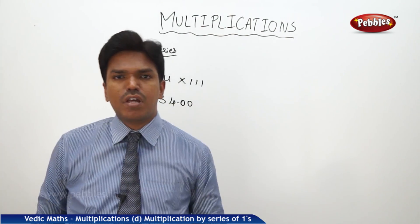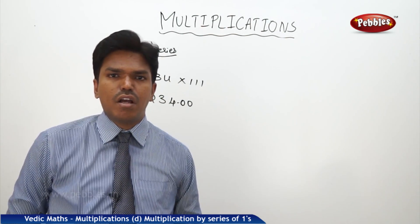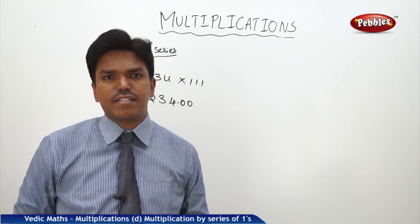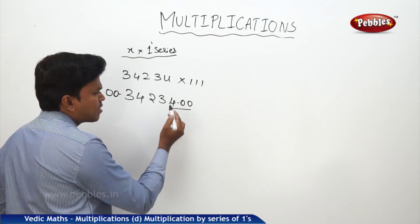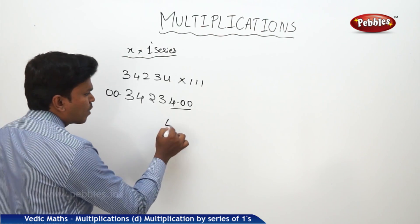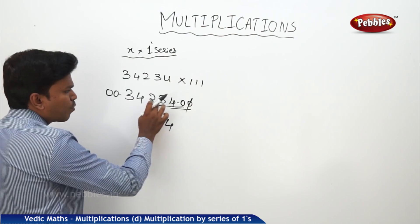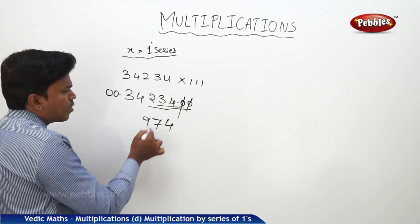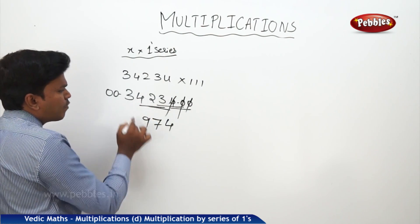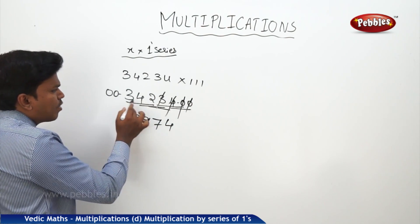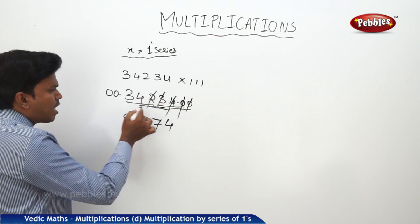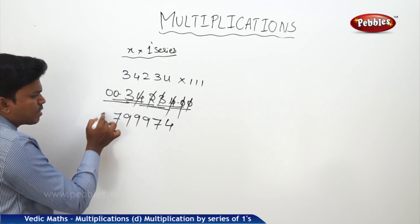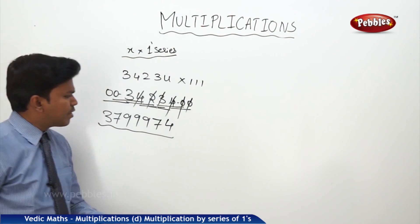Suppose 34234 into 111. Drop the number: 34234. Since there are 3 ones, add two zeros before and after. Now, since there are 3 ones, maximum you need to add 3 digits at a time from the right side. 0 plus 0 plus 4 = 4. Leave rightmost, add next 3: 0 plus 4 plus 3 = 7. Next 3: 4 plus 3 plus 2 = 9. Next 3: 3 plus 2 plus 4 = 9. Next 3: 3 plus 4 plus 0 = 7. Finally 0 plus 0 plus 3 = 3. So the answer is 3799743.